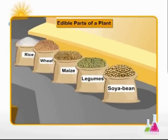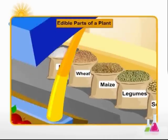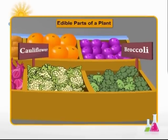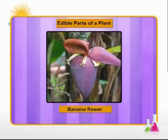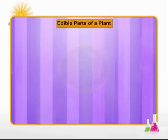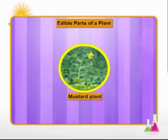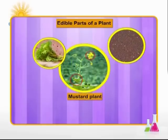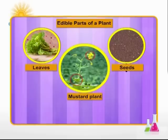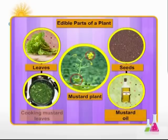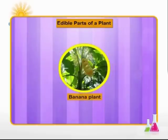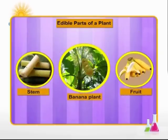Stems grow both above the land and beneath it. Sugar cane, potato, ginger, and onion are some of the stems that are eaten as a source of food. Cereal grains such as rice, wheat, and maize, and legumes like black gram, pigeon pea, lentils, and soya bean form the main staple food. Flowers such as cauliflower or broccoli are eaten cooked or raw in the form of salad. The flower of banana is also eaten in cooked form. Certain plants provide us with two or more edible parts — for example, the mustard plant. We get oil from its seeds and also use its leaves as a vegetable. Likewise, we eat both the fruit and the stem of a banana plant as food.